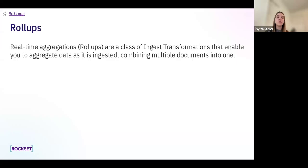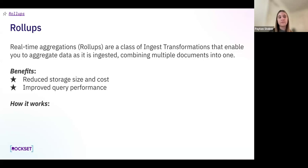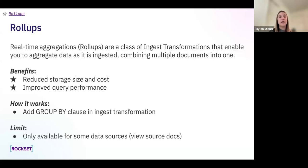Roll-ups, or real-time aggregations, are a class of ingest transformations that enable you to aggregate data as it is ingested, combining multiple documents into one. Benefits include reduced storage size and cost, plus improved query performance since you're pre-aggregating your data so you don't need to include aggregations in your queries. Roll-ups work by adding a group-by clause in your ingest transformation. A limit is that roll-ups are only available for some popular data sources, so please reference your specific source documentation to see if they're available.